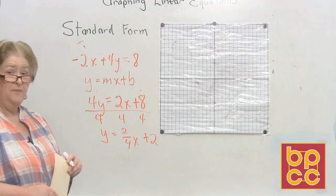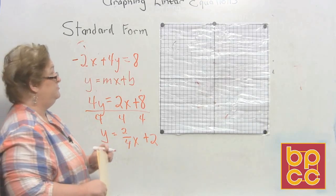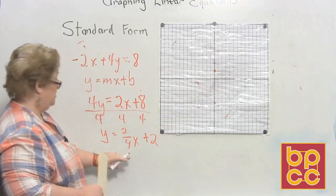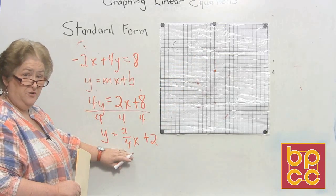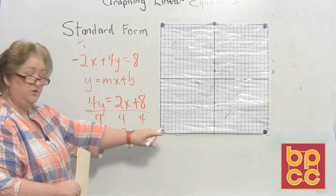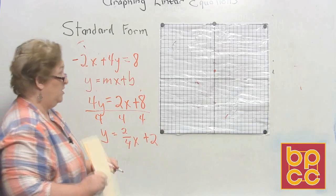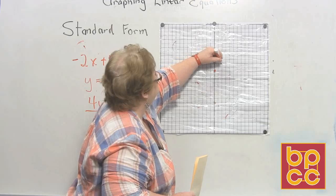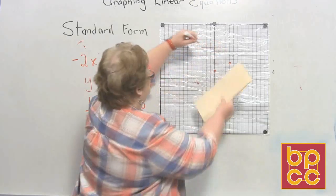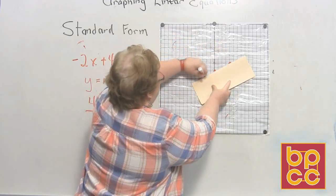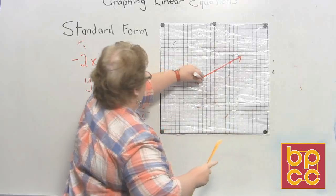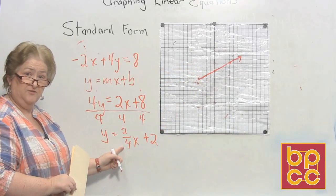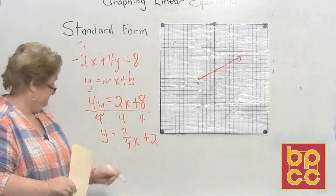Let's go up the y-intercept to 2 — 1, 2. From there we want to rise 2 positive and go to the right 4. So we go up 2 and over 1, 2, 3, 4, then draw our line. This is going uphill because the slope is positive.